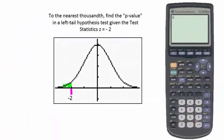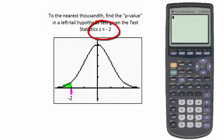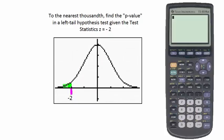In a closely related problem, we're asked to find, to the nearest thousandth, the p-value for a left-tailed hypothesis test given the test statistic z is equal to negative 2. This tells us we're using the normal distribution, where negative 2 is on the x-axis and we find the area under the normal curve less than negative 2.